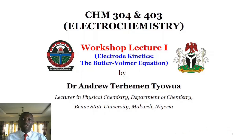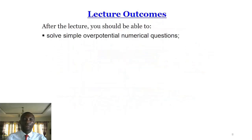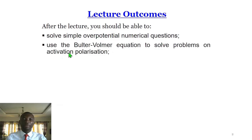Hi everyone, welcome to CHM 304 and 403 Electrochemistry, workshop lecture 1, which is on electrode kinetics with a focus on the Butler-Volmer equation. After the lecture, I expect you to be able to solve simple overpotential numerical questions and use the Butler-Volmer equation to solve problems on activation polarization or overpotential.